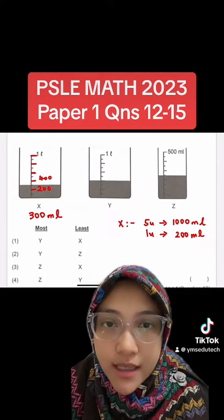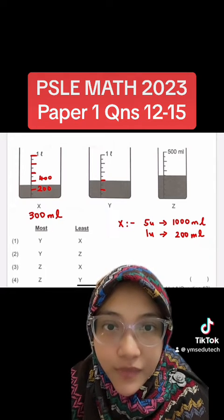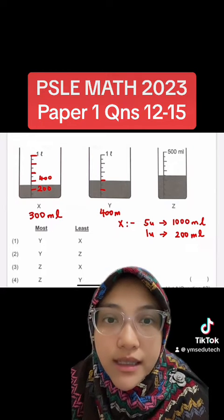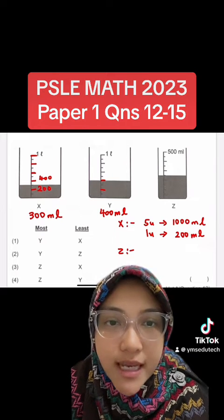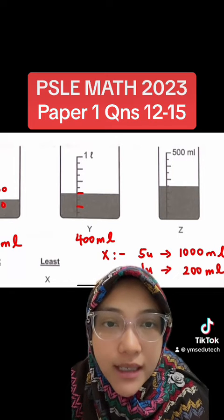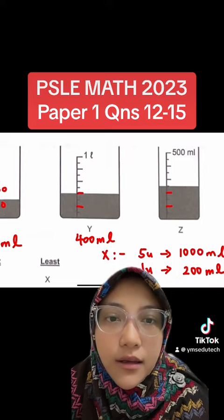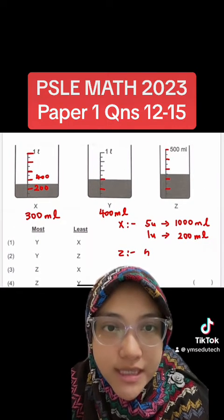Container Y is the same as container X, but the volume of water in it is different. The volume of water is 400 milliliters. Do the same as container X. Calculate the number of longer lines of container Z. When we do that, we get five lines which represent five units.